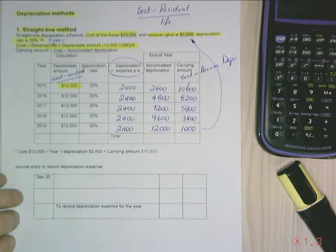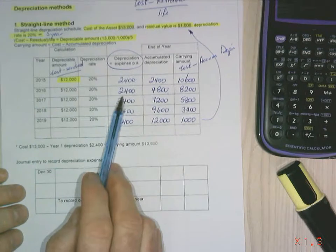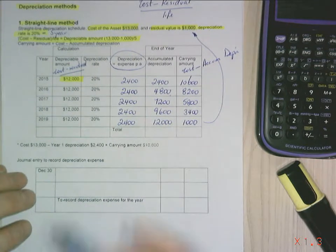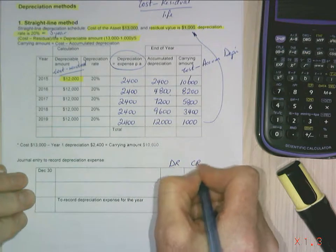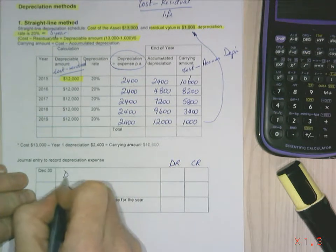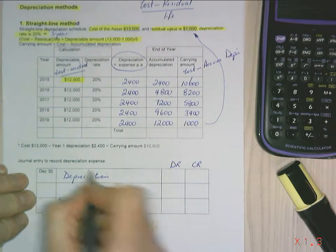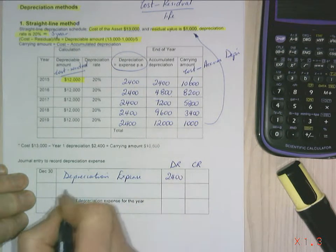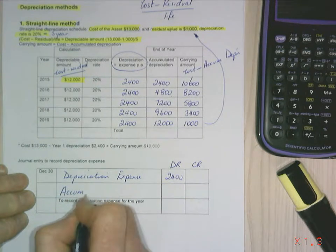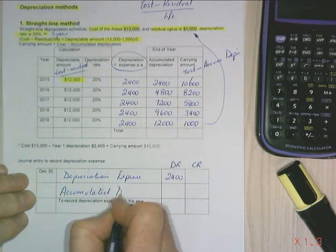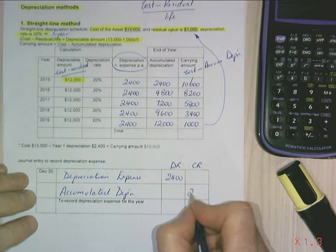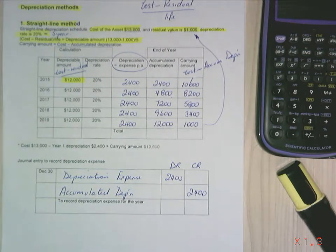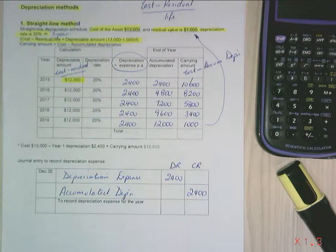Now if we have a look at the journal entry required, I'm only going to do the journal entry for one year because it'll be the same journal entry five times. My debit column and my credit column, my depreciation expense, because my expenses are a debit balance, is $2,400. And the other side of my journal entry is my accumulated depreciation, which would also be $2,400. And that's how to calculate straight line method.